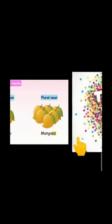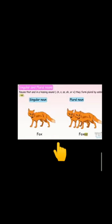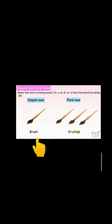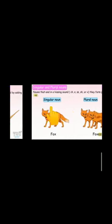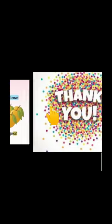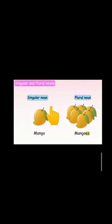So children, remember one thing. If the noun ends in a hissing sound like ch, s, ss, sh, or x, we always add es. And in the other or most of the cases, we always add s. Hope it is clear to everyone. Revise it again. Thank you and take care children.